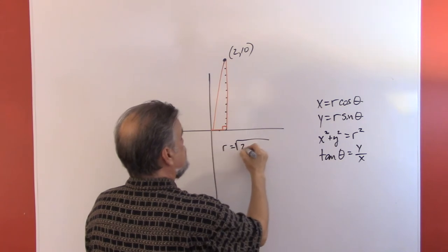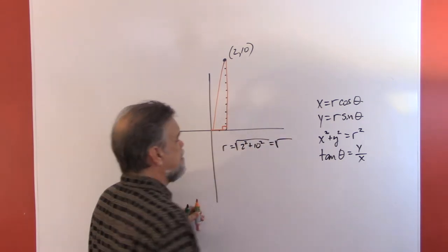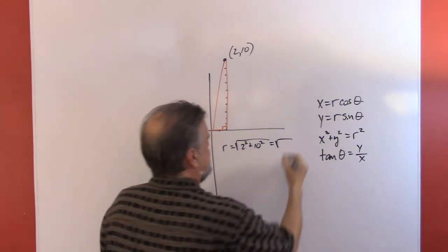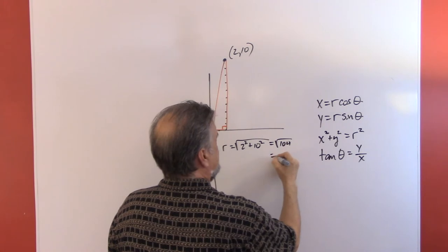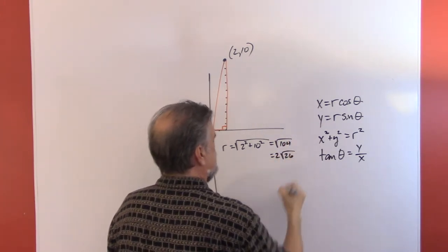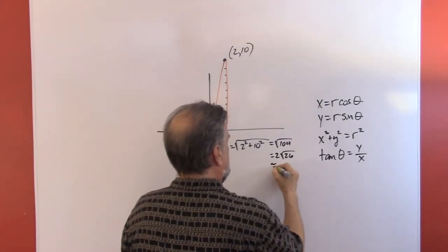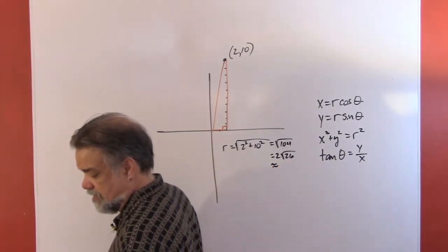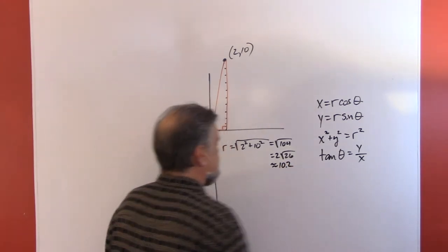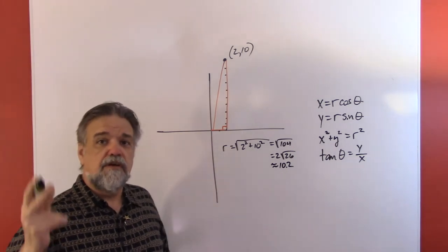To get r, I take the square root of 2 squared plus 10 squared, which is the square root of 4 plus 100, which is the square root of 104. Simplifying, that's 2 times the square root of 26, which is approximately 10.2. So r is 10.2.